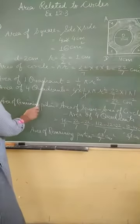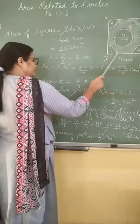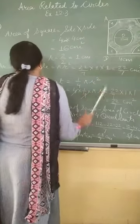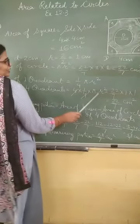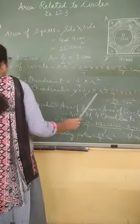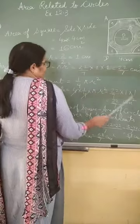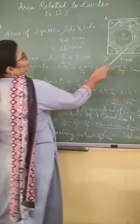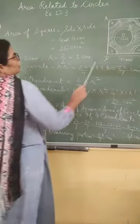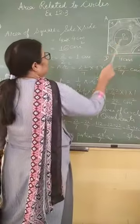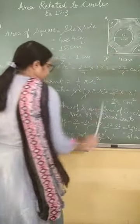What is area of a quadrant? Quadrant is 1 fourth of a circle. That is 1 by 4 π r square. If we want to find out the area of all 4 quadrants, then what is that? 4 into 1 by 4 π r square. 4 and 4 are cancelled. π r square, r is 1 into 1. So, 22 by 7 centimeter square. Area of the remaining portion is area of square minus area of circle minus area of 4 quadrants.